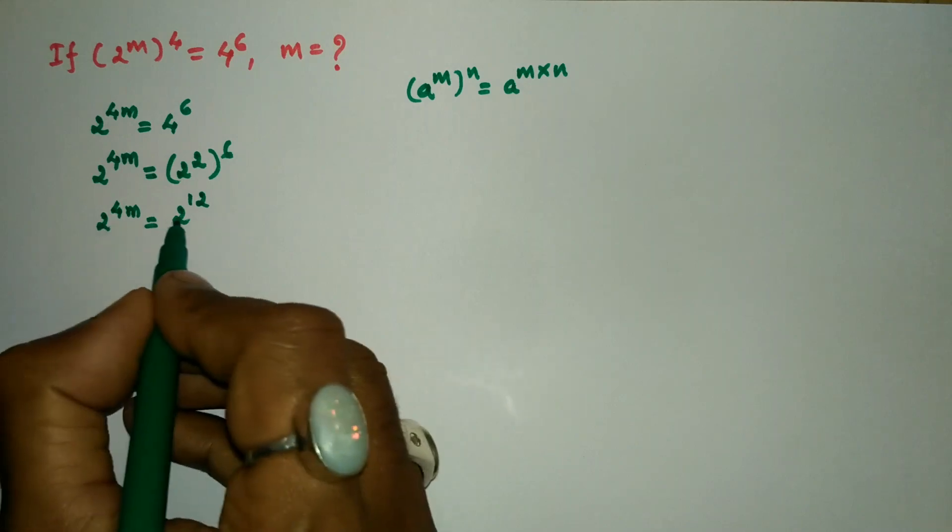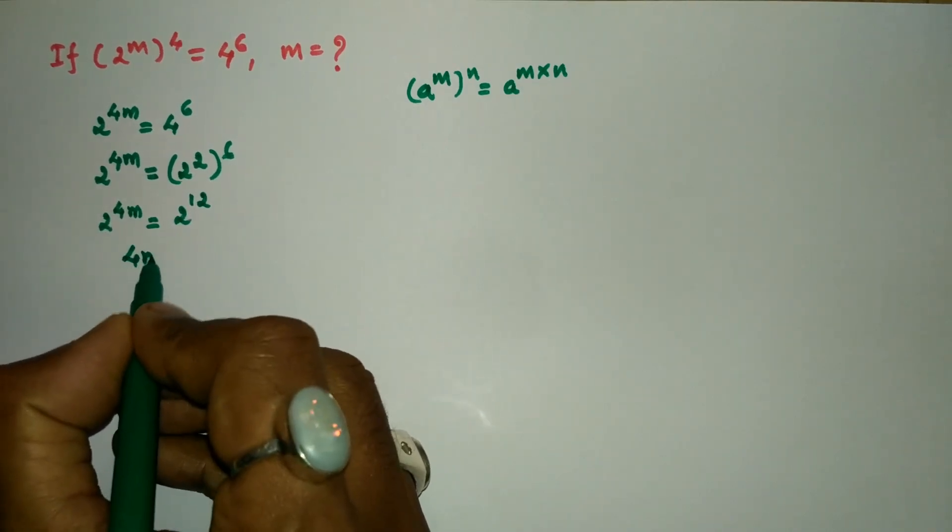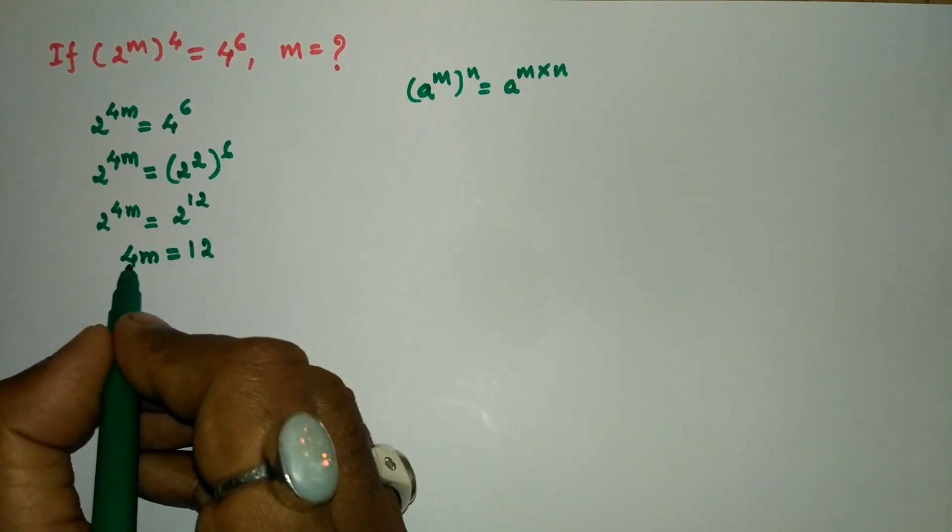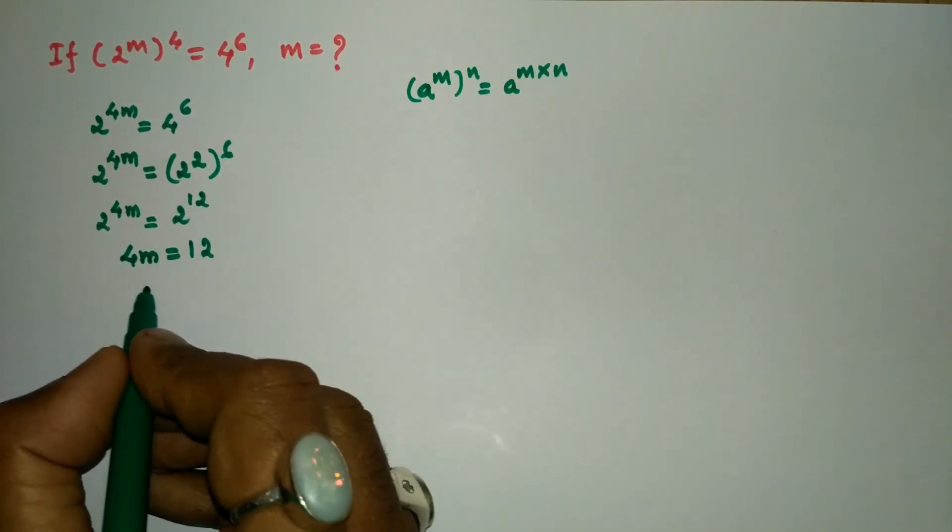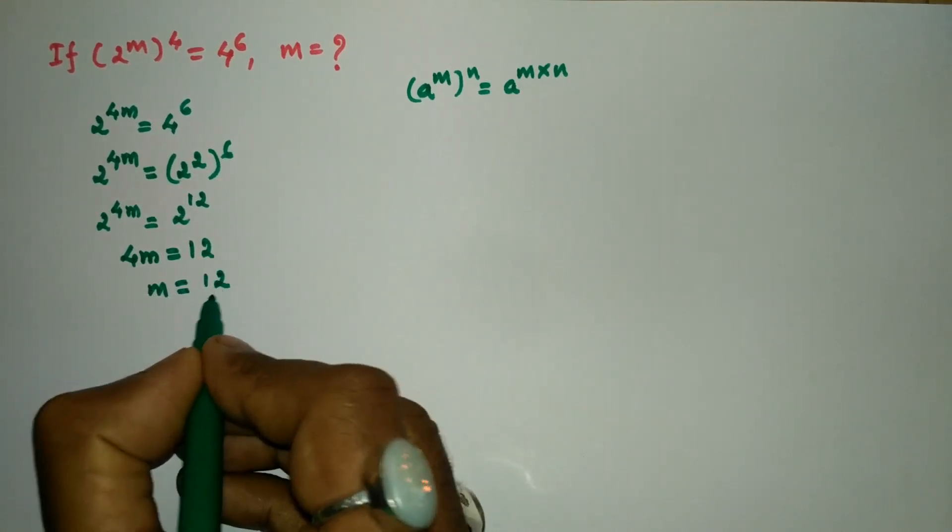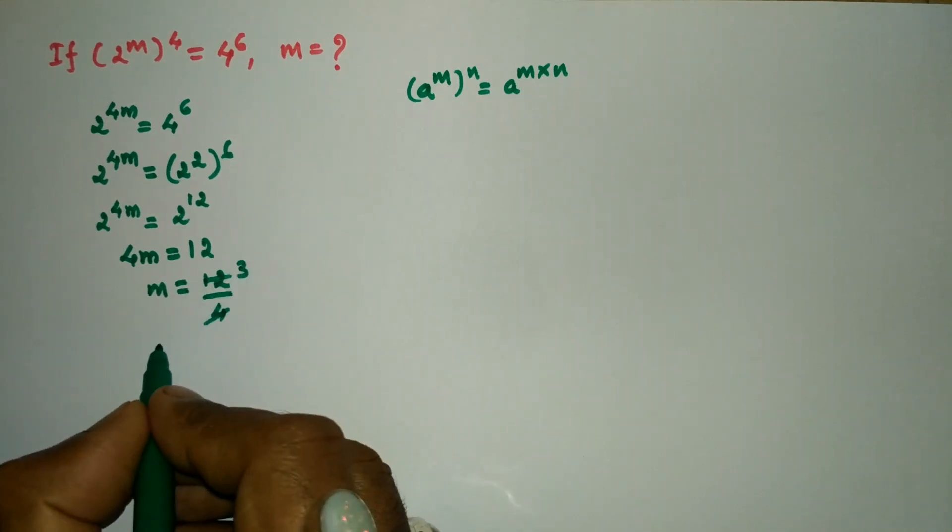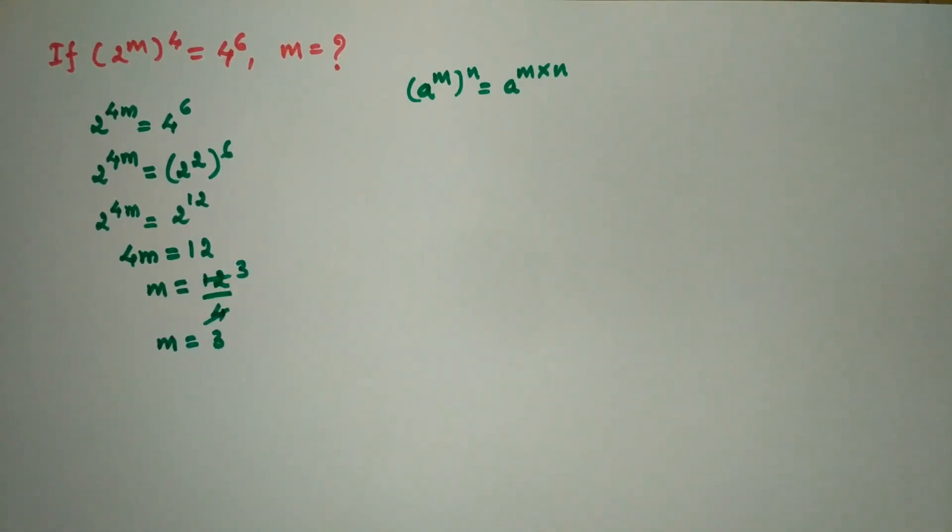Now you can see the bases are equal, so both bases cancel out. We remain with 4m equals 12. Let us transform this 4 from LHS to RHS. So m equals 12 divided by 4, which gives us 3. Hence m equals 3.